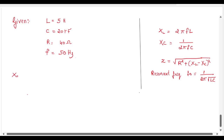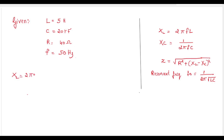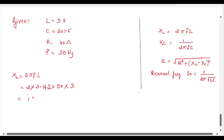First let us find the value of inductive reactance XL. XL equal to 2 pi fL. We can write this as 2 into pi value 3.142 into frequency 50 hertz into inductance value 5. So we get XL equal to 1571 ohms.